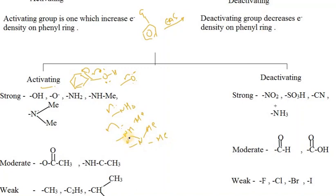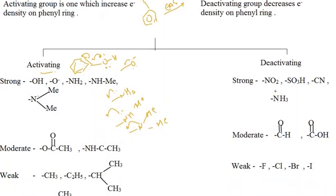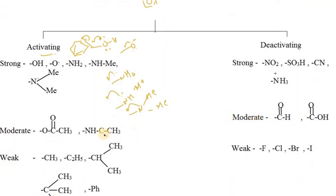These are highly activating compounds considered as strong activating groups. For moderate activating groups, consider a compound where oxygen has a lone pair but it is shared by resonance with an adjacent oxygen — so it goes 50% into the ring and 50% toward the other oxygen, making it a moderate activating group.